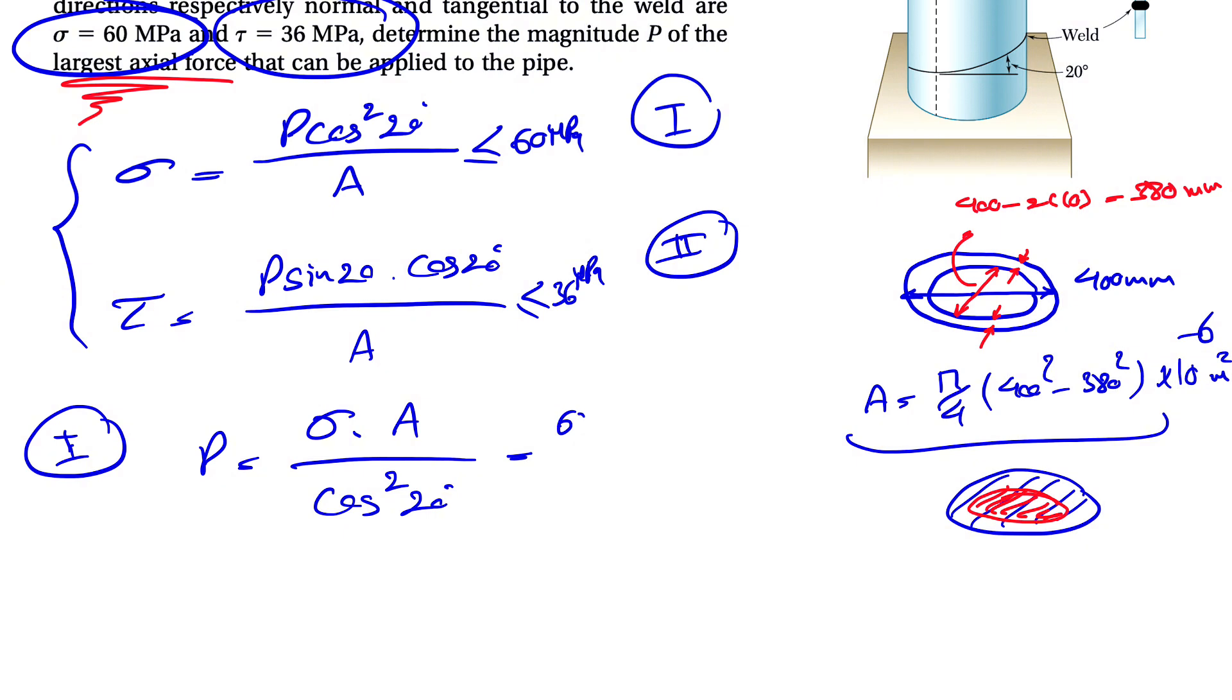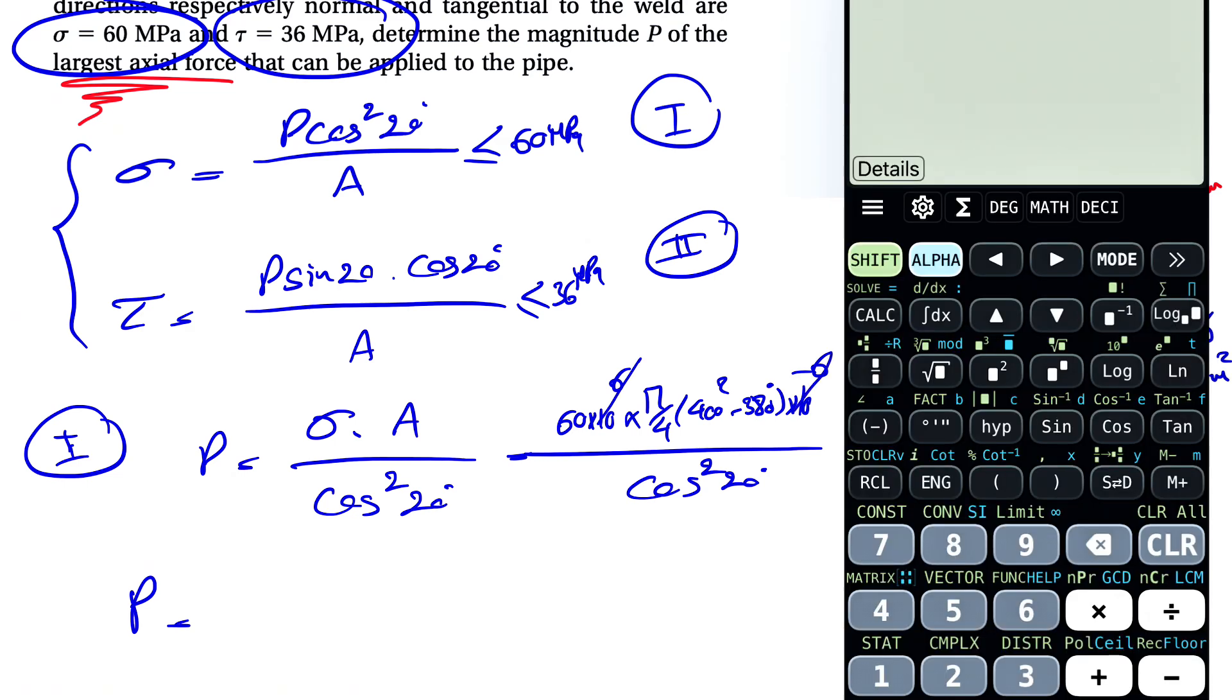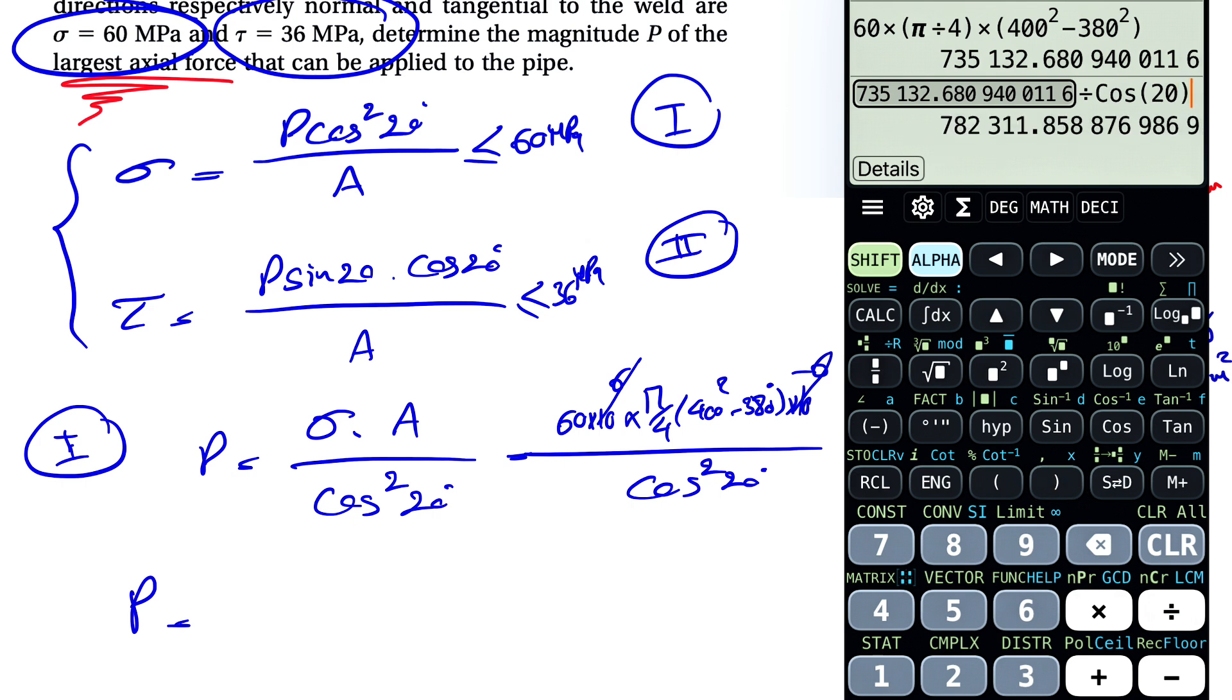So our P would be 60 times 10 to the sixth times our A pi over 4, 400 squared minus 380 squared times 10 to the minus 6 over cosine squared of 20 degrees. And let's see what we get in here. And that's going to give us P in Newton. So the 10 to the 6 and 10 to the minus 6 will be cancelled out.